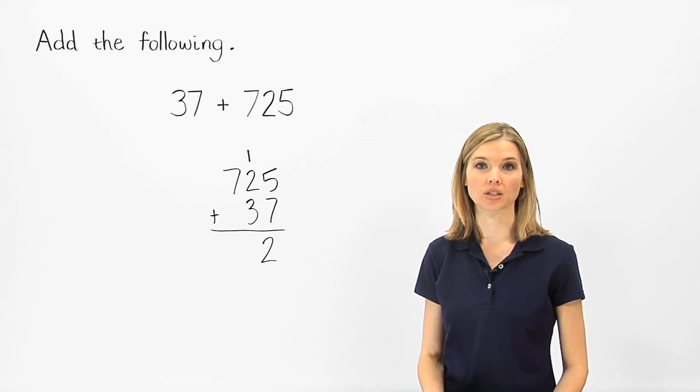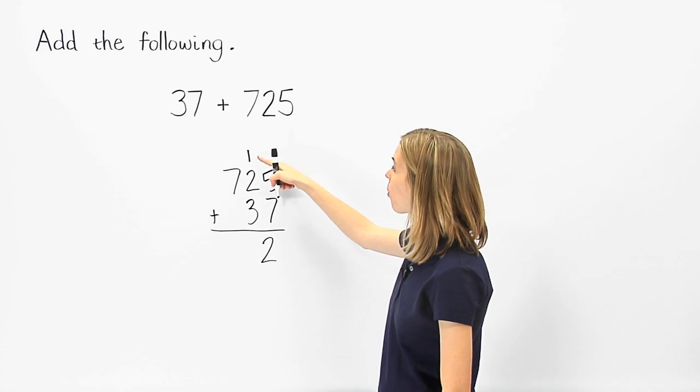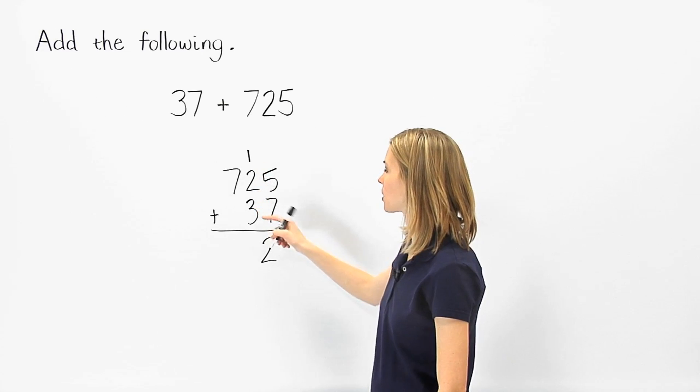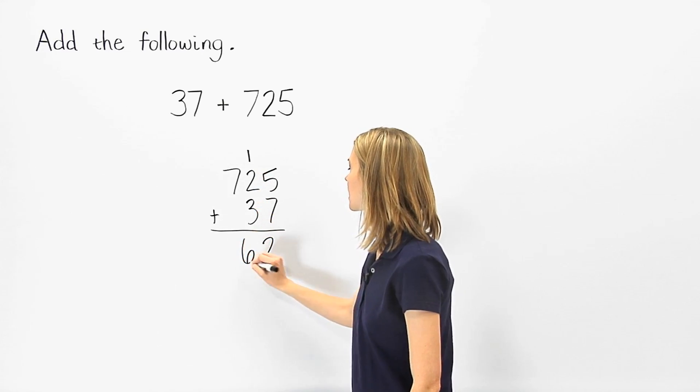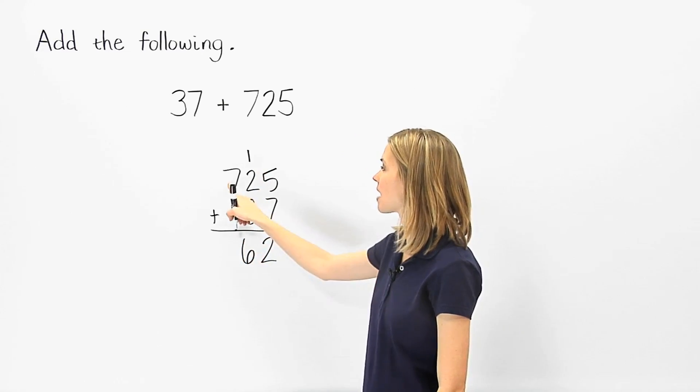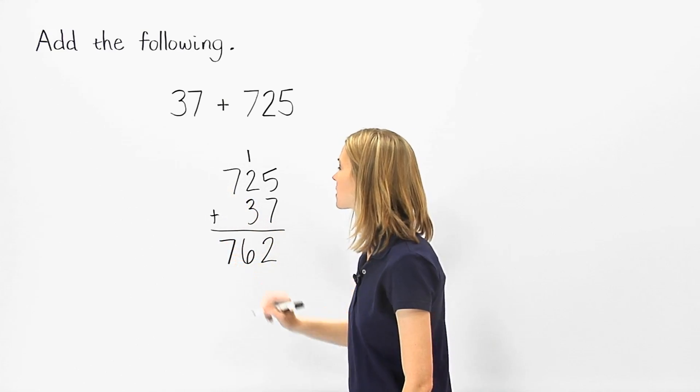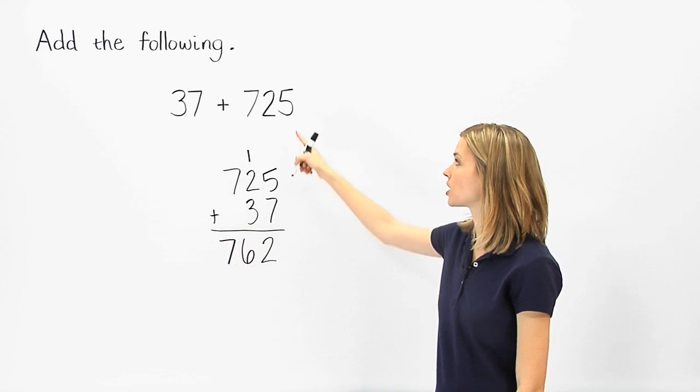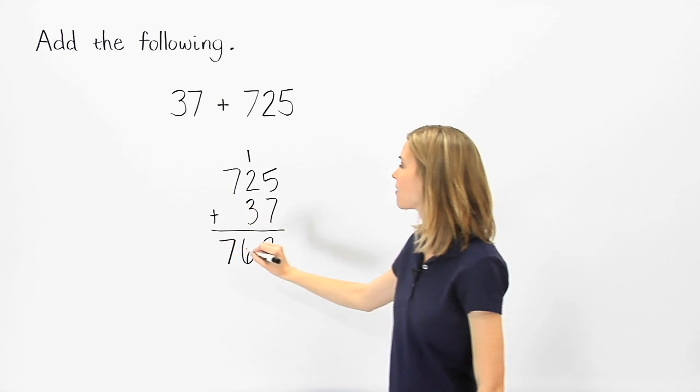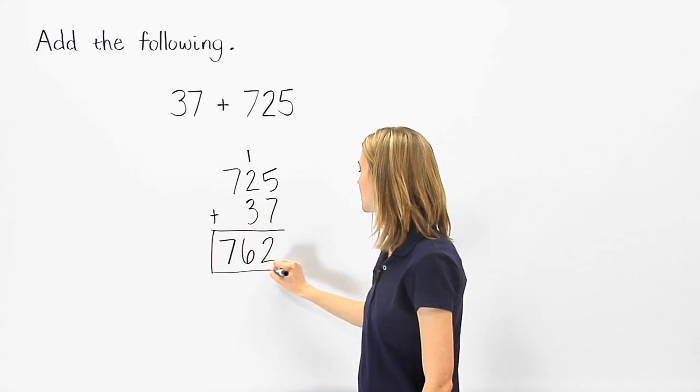Now, adding the numbers in the tens column, we have one plus two plus three, which is six. And in the hundreds column, seven plus zero is seven. So the sum of thirty-seven and seven hundred twenty-five is seven hundred sixty-two.